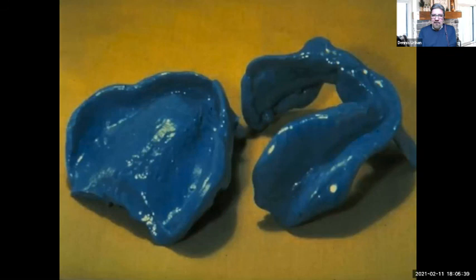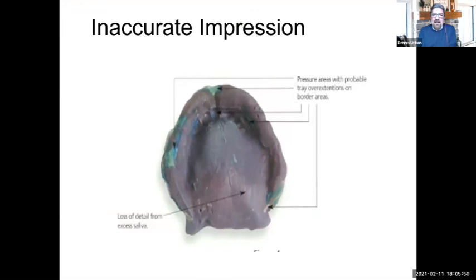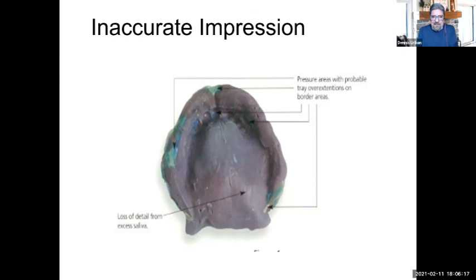Here you have a picture of a nice impression — we've got all the anatomical landmarks and it looks like this is going to be a good impression. This other one is an inaccurate impression: you have pressure areas and probable overextension of the tray where you see the material coming through, loss of detail, excess saliva, and overextension of the border areas. If I see a case like this come into the laboratory, I'm going to call the doctor and ask for a new impression, possibly with a lighter body material. I'd also pour this model, trim back the overextensions, and make a new custom tray.